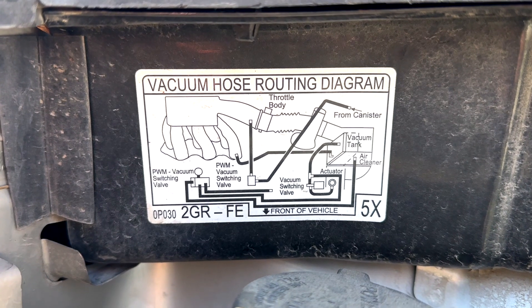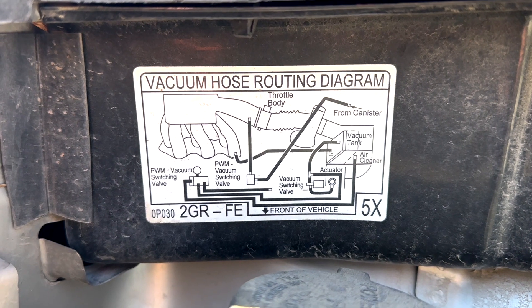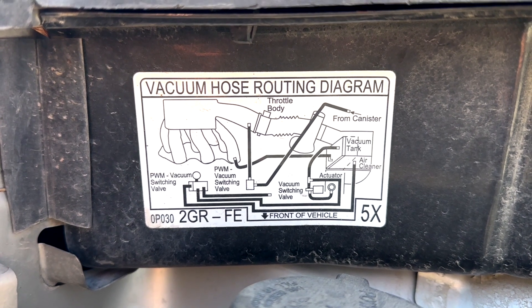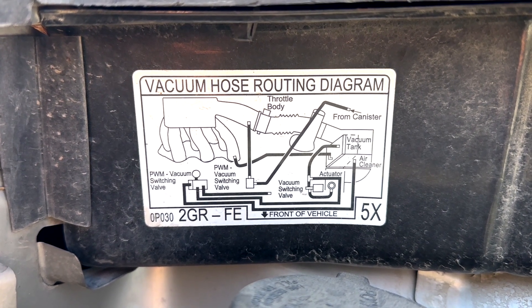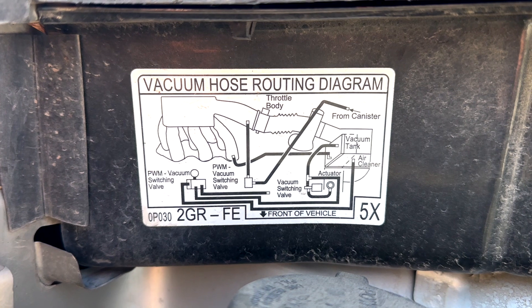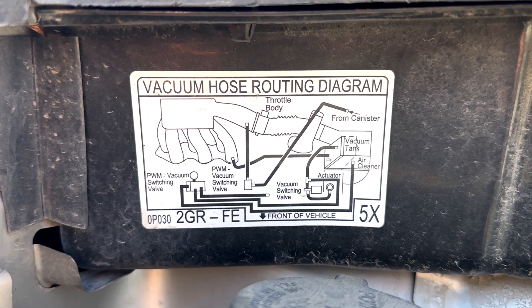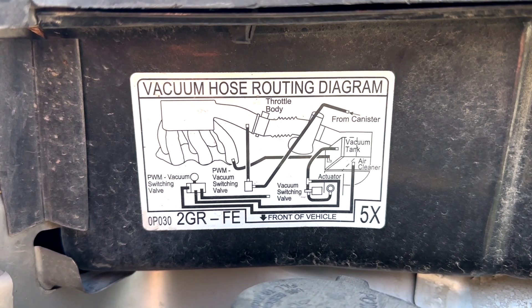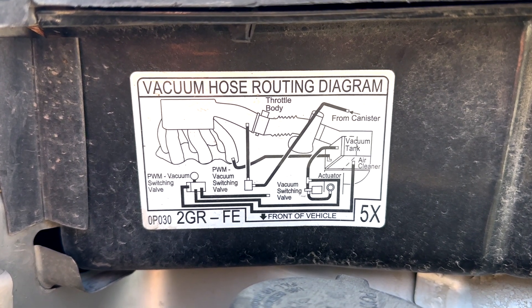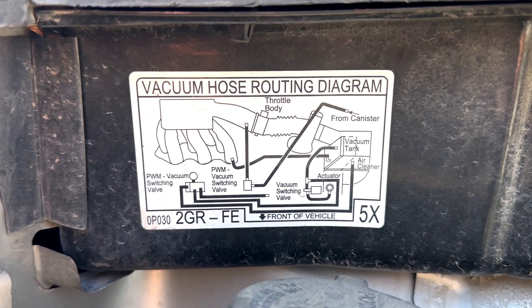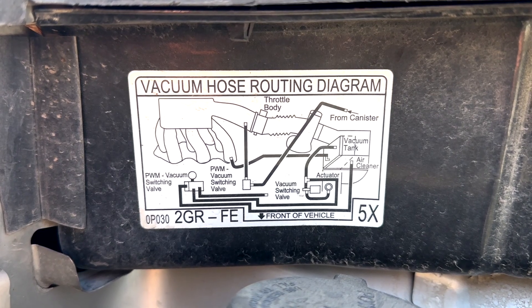Address vacuum leaks. Leaking vacuum lines can disrupt the air-to-fuel ratio, leading to misfires. Inspect the vacuum hoses for cracks, loose connections, or any signs of leakage. Replace or repair any damaged hoses.